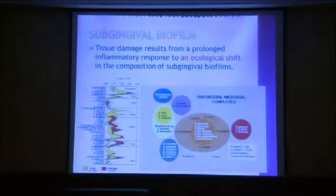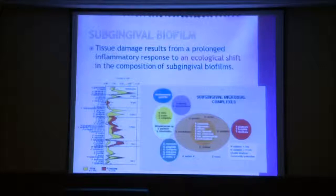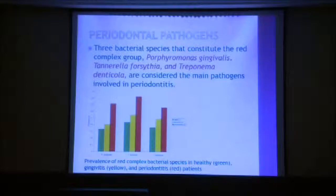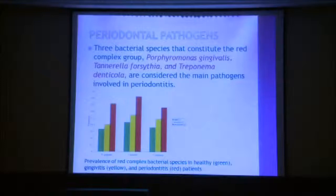Subgingival biofilm is obviously different in periodontal-healthy patients versus those with periodontitis. You can see an increased number of red and orange complex bacteria. The main periodontal pathogens are bacteria from the red complex, such as Porphyromonas gingivalis, Tannerella forsythia, and Treponema denticola, and on this graph you can see that the prevalence of all three bacteria is very high compared to gingivitis or healthy state.